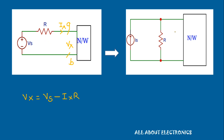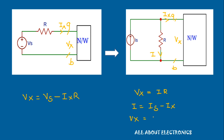Similarly, for the transformed network, the voltage across the two terminals remains Vx and the current entering node A remains Ix after the transformation. Here we can write Vx as the drop across resistor R — that is Ix·R — where the current I flowing through resistor R is Is minus Ix.